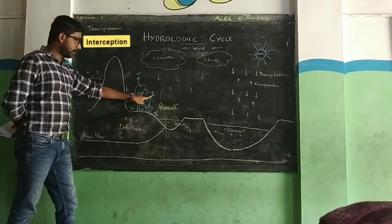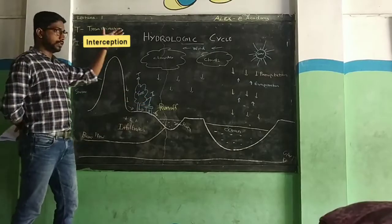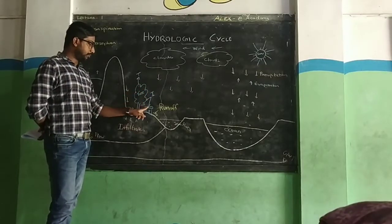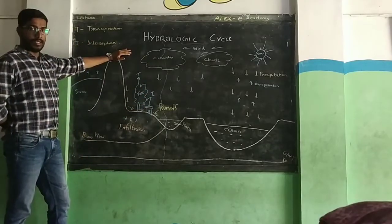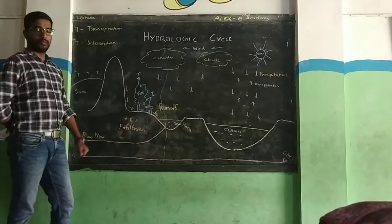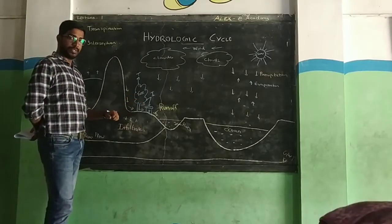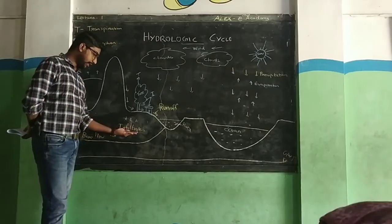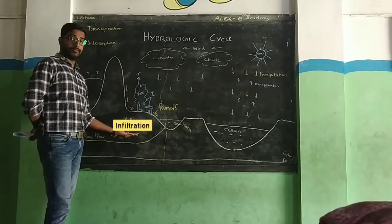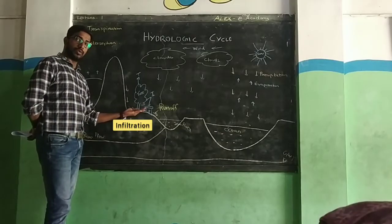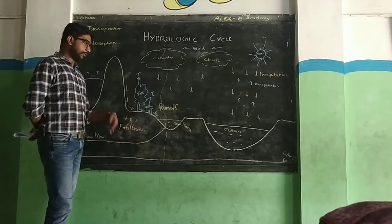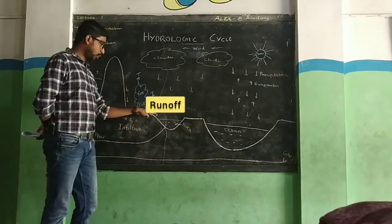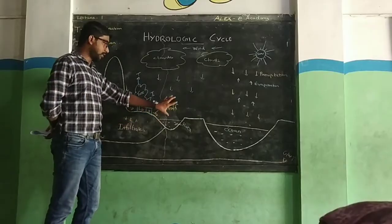That's what we call interception. The precipitation hits trees and buildings — that is called interception. Some water molecules reach the ground surface. Water absorbed into the soil is called infiltration. Some part of the precipitation will be absorbed by the dry soil, and that is called infiltration. Water that flows over the surface — like a river or stream — that's what we call runoff.